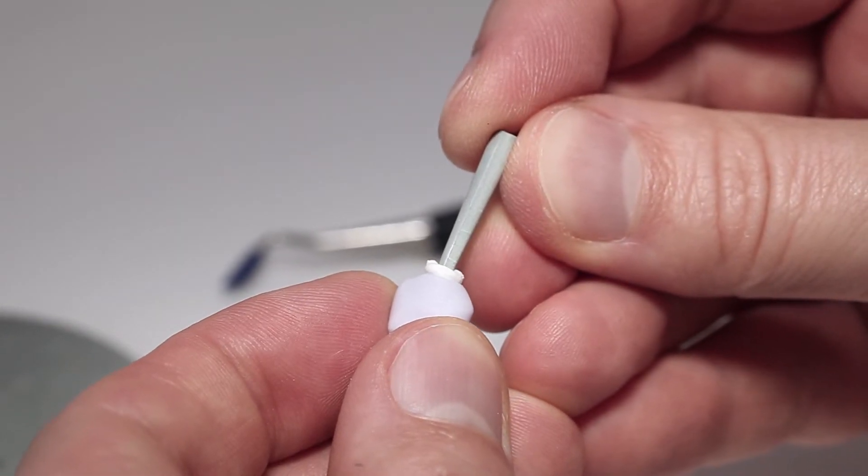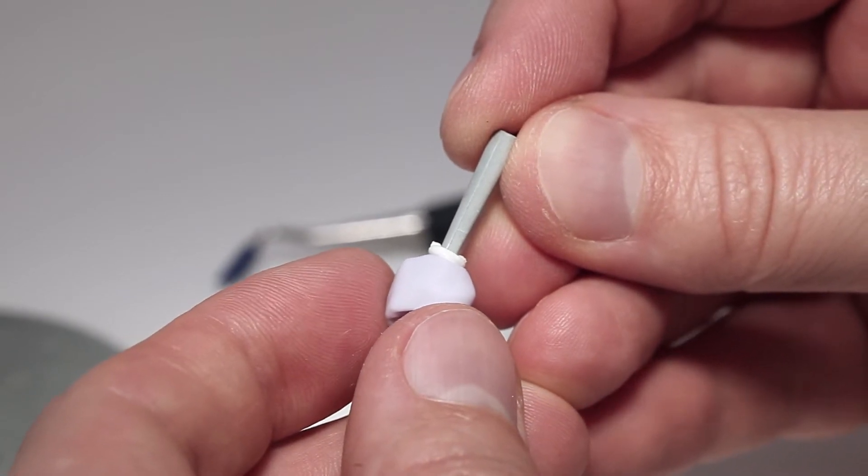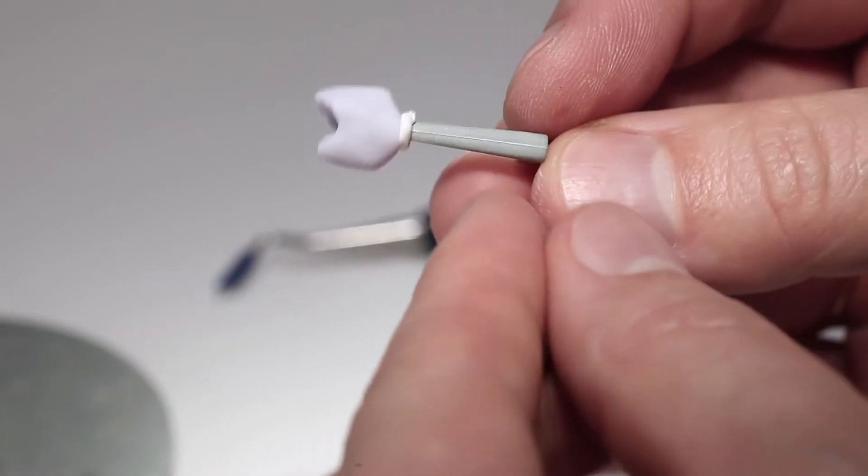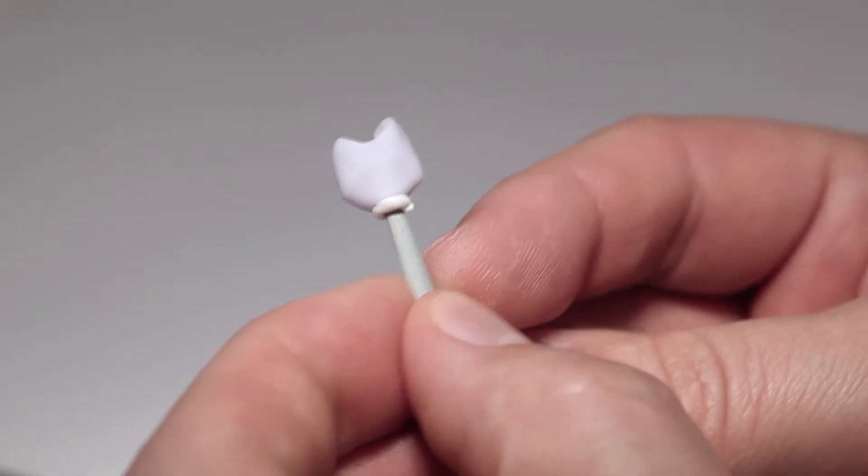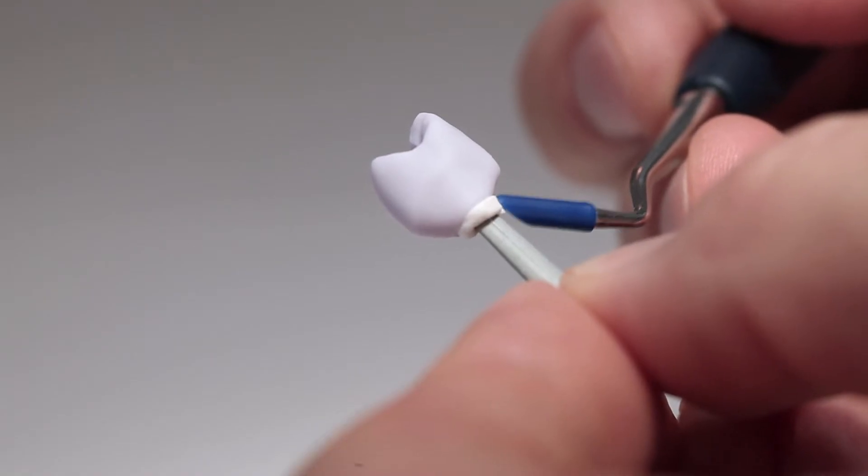Press the IPS eMAX CAD crystallization pin excess only slightly into the auxiliary firing paste so that it does not touch the wall of the ceramic structure. If the pin is pushed in too deeply, cracks may develop in the ceramic structure.